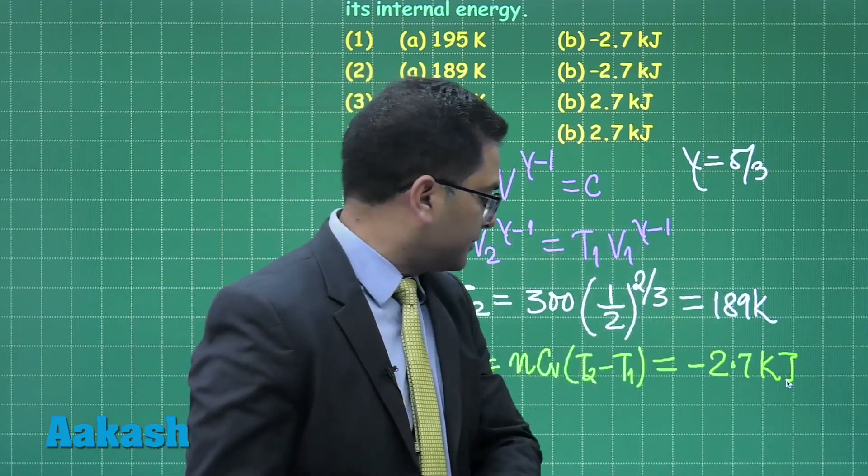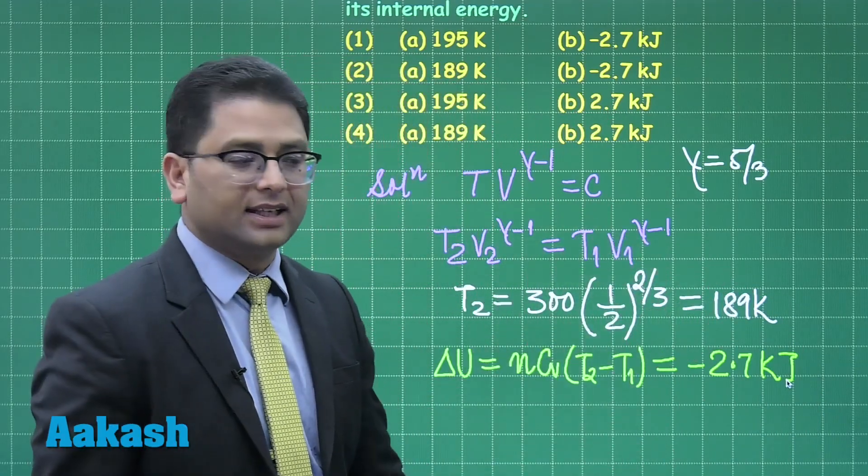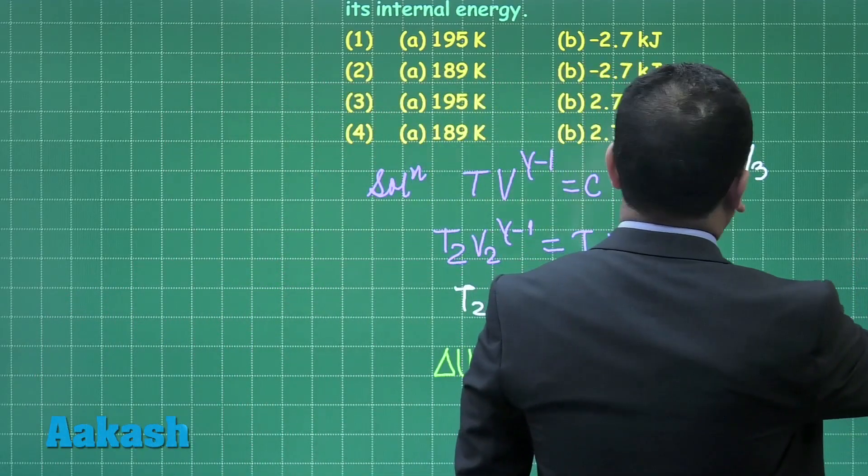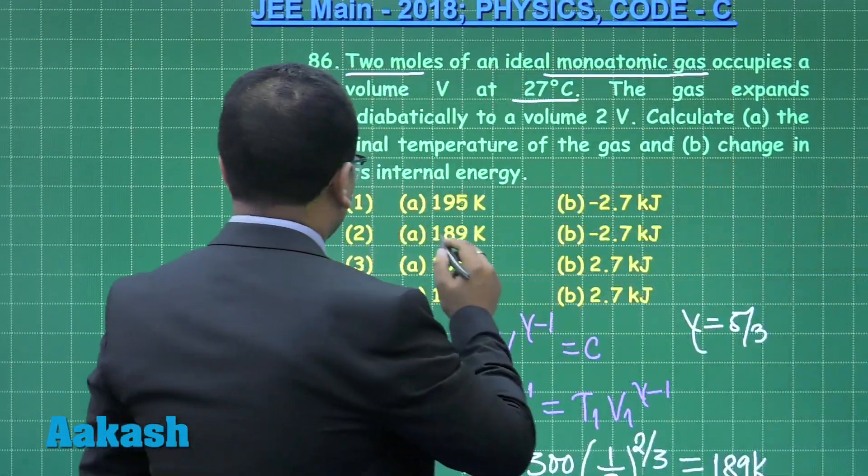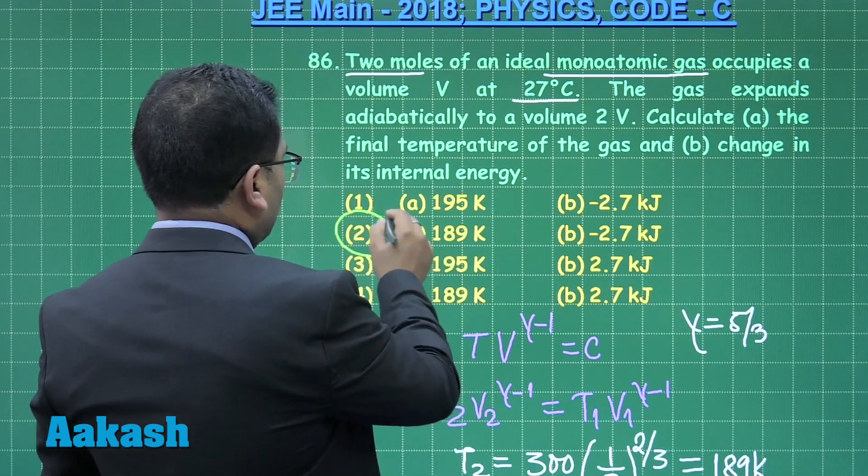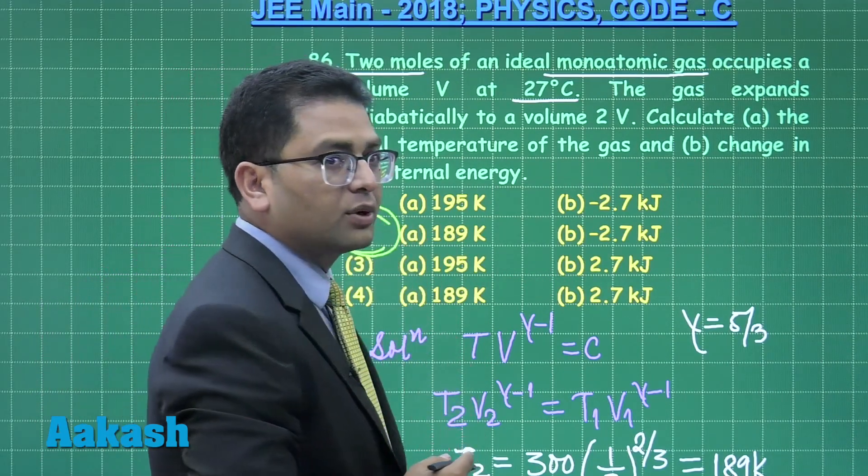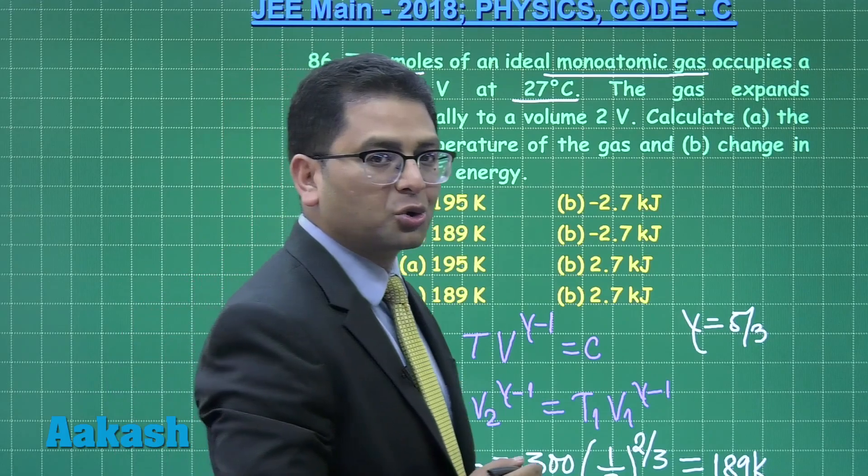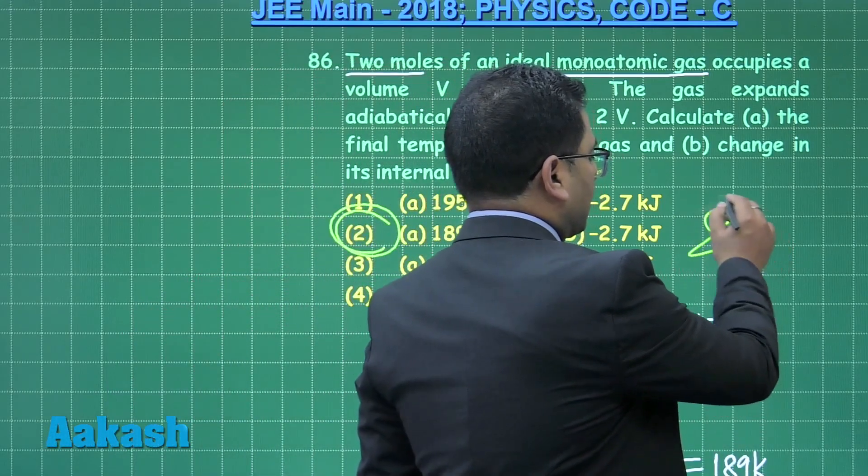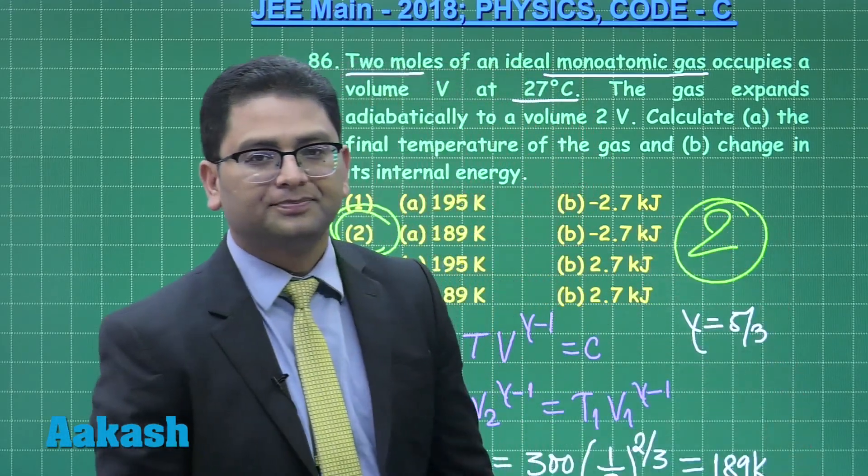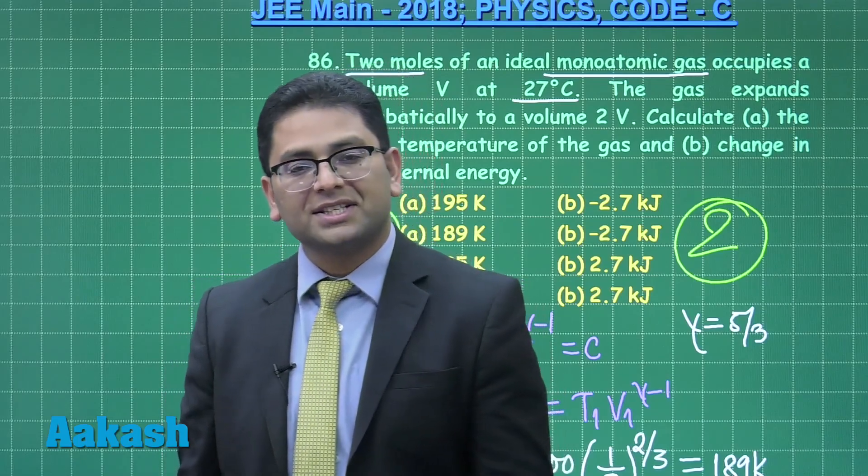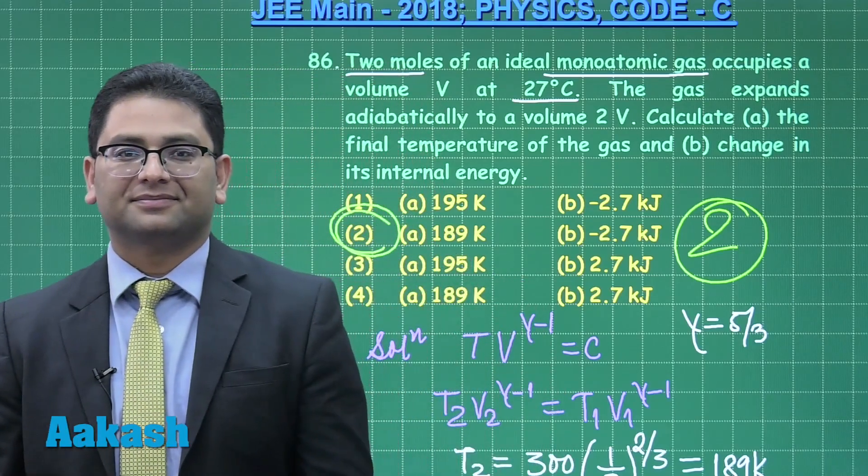All right, so temperature final 189, the change in internal energy minus 2.7 kilojoule. So this will give option number 2 as the correct one for question number 86. So question number 86 has correct option as option number 2. Let's go to question number 87.